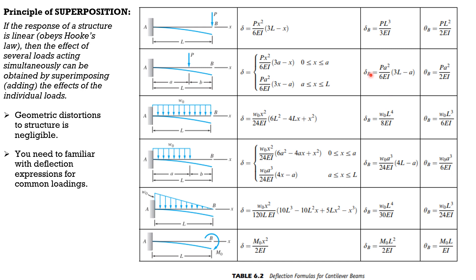You will use this table in answering problems if a particular combination of loading falls into any one of these situations. For a cantilever beam loaded with triangular loading with maximum intensity at the fixed support, the general expression for deflection is given. In particular at B, you must be familiar with WL⁴ over 30EI, and theta B is WL³ over 24EI.